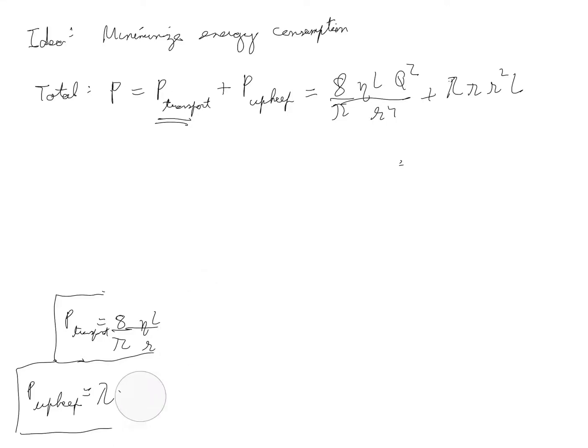Now to minimize the power with respect to the radius we do dP by dr and equate it to 0. If you take the derivative you get Q equals pi by 4 square root of lambda over eta times r cubed. By the way this derivation is given in Wikipedia so if you have trouble following any of the steps then you can look it up there.